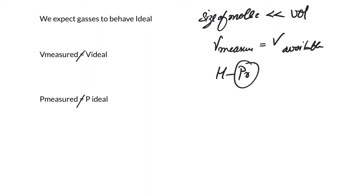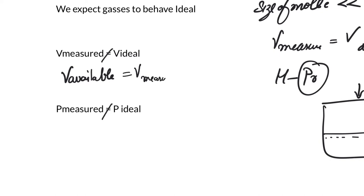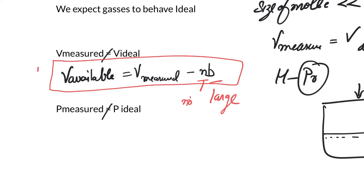But I want you to think about what happens when you have higher pressure. Under higher pressure, gas is compressed and the volume of the molecules themselves becomes a significant fraction. So the V available for the molecules is not equal to V measured because we have drastically reduced it because of the high pressure. So there is a correction factor nb. The more number of molecules, the more is n, whereas b depends upon how large the gas is. So V available is V measured minus a correction factor.